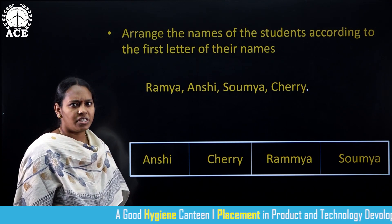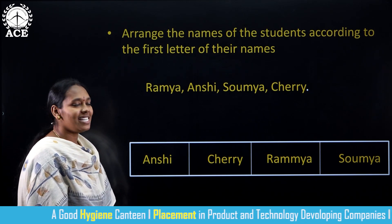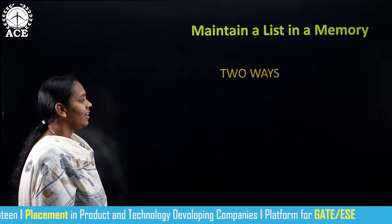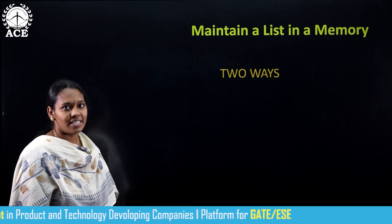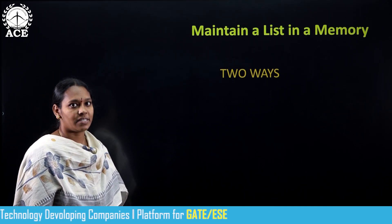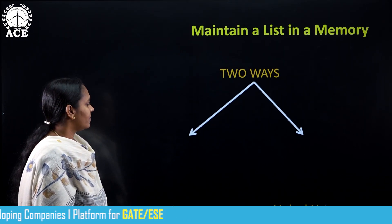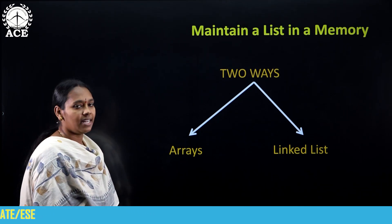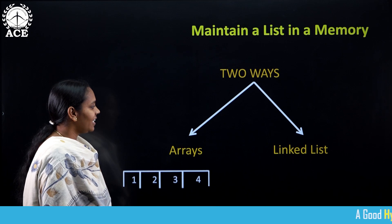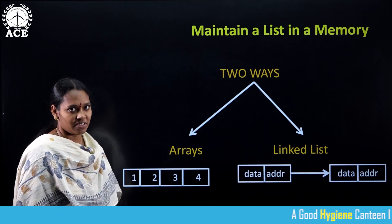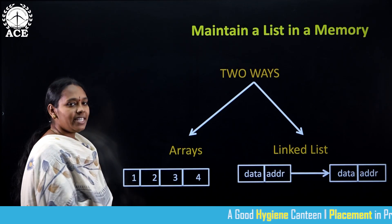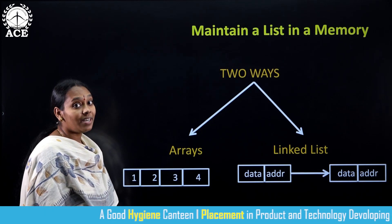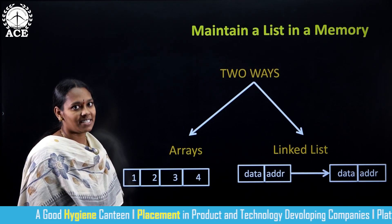Now the question is, how to arrange these names in memory? In order to maintain a list in memory, there are two ways. The first one is arrays and the other one is linked list. Basically, these two are data structures. We have already seen the arrays data structure in C language. Now we will discuss the linked list data structure.